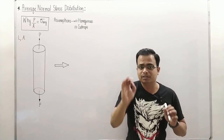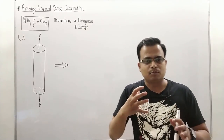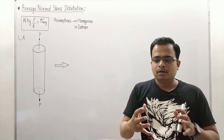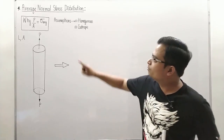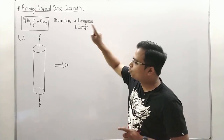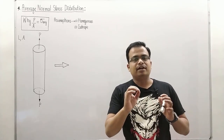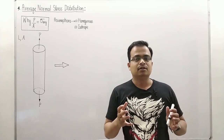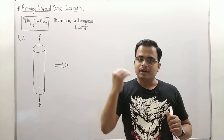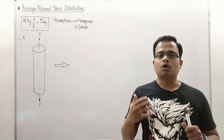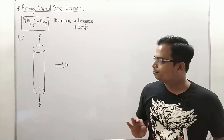Homogeneous means that the mechanical properties and physical properties are the same throughout the entire volume. Isotropic means that the mechanical properties along X, Y, and Z directions are the same — that means Young's modulus along X, along Y, and along Z will remain one and the same.